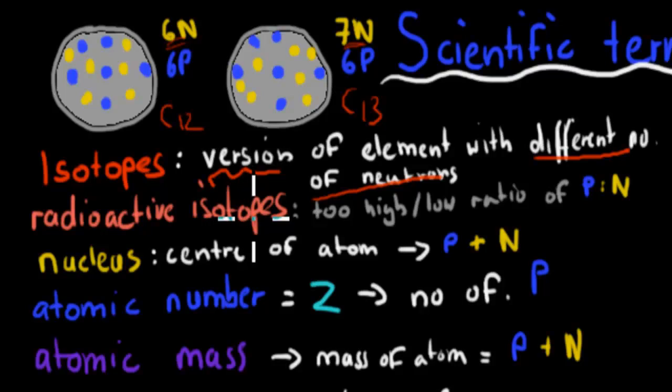A radioactive isotope, or a radioisotope, means it has a too high or low ratio of protons to neutrons. And remember, anything which has the atomic number of less than 20 should have a ratio of 1 to 1. Anything above it should have a ratio of 1 proton to 1.5 neutrons. And if it's too big, if it has an atomic number of greater than 83, then it's always unstable. The radioactive isotopes are unstable.